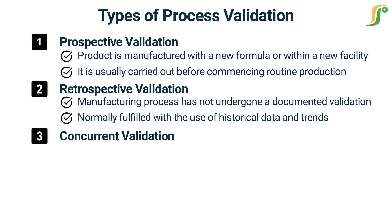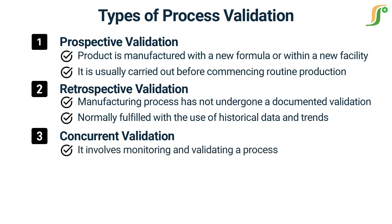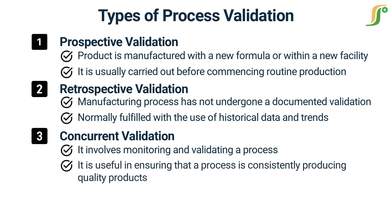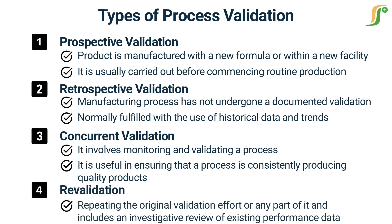The third type is concurrent validation, which involves monitoring and validating a process as it is in use. It is useful in ensuring that a process is consistently producing quality products and can help identify any issues that arise during regular use. The fourth type is revalidation, which means repeating the original validation effort or any part of it, and includes an investigative review of existing performance data. Possible reasons for revalidation include transfer of a product from one plant to another, changes to the manufacturing or cleaning process, periodic checking of validation results, increase or decrease in batch size, or sequential batches that fail to meet product specifications.